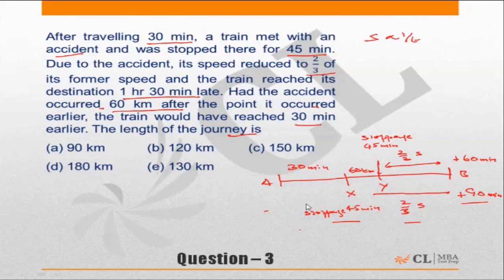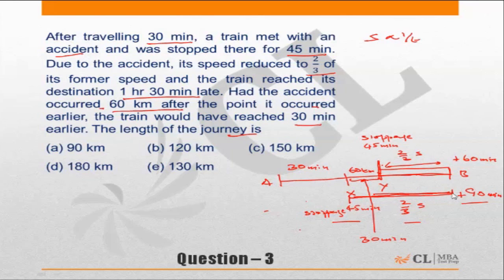The delay on account of reduced speed over the full stretch from X is 90 minutes, and the delay due to reduced speed from Y is 60 minutes. That means the delay on account of this 60-kilometer stretch XY due to reduced speed is 30 minutes — because over the entire stretch the delay is 90 minutes and over the stretch from Y it is 60 minutes, so this particular 60 km stretch contributes 30 minutes of delay.